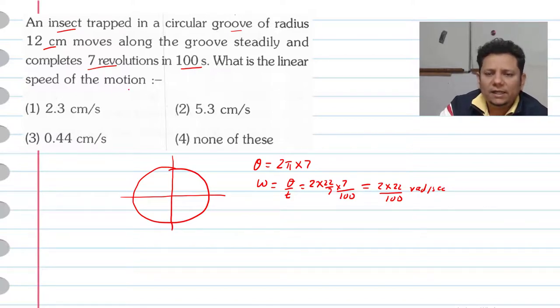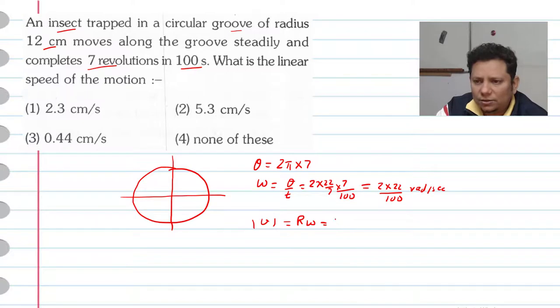Now we ask what is the linear speed of the motion? So here you will write the speed as r omega. The value of r is 12 cm, which is 12 × 10⁻² meters, multiplied by omega, omega is 2 × 22/100.